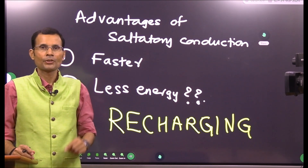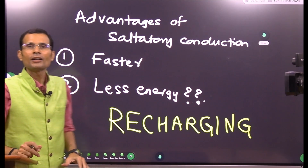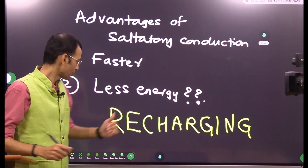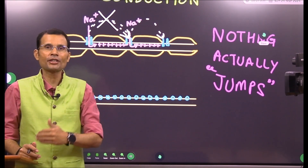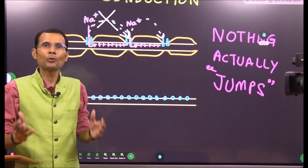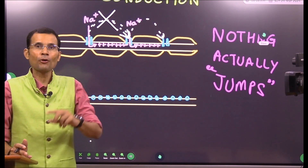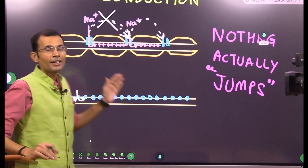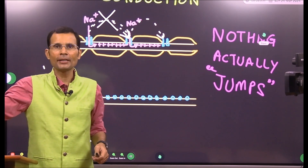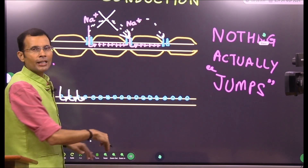The second advantage: saltatory conduction spends less ATP, less energy. Does action potential require any energy at all? The answer is no. Depolarization — sodium comes in along its concentration gradient, it's diffusion. Repolarization — potassium goes out, again diffusion from high to low concentration. So action potential does not require energy. Then why does saltatory conduction require less energy? It's not for the action potential itself, but for the process of recharging that occurs after the action potential is over — just like recharging a mobile phone battery.